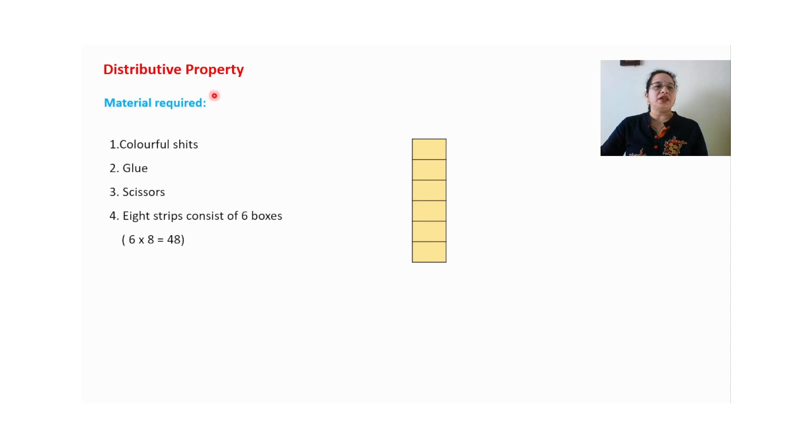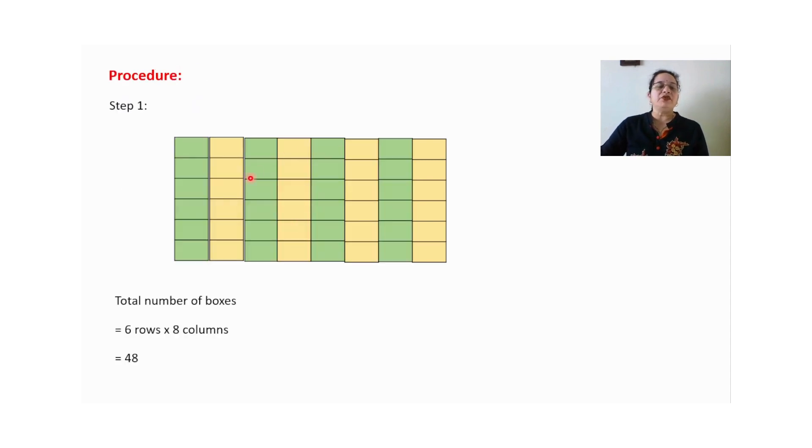Let us start with the activity. Material required is colorful sheets, glue, scissors. Eight strips consist of six boxes. Six inches strip you can take. My example I have taken six multiplied by eight is 48. For that I require eight strips of six boxes. Let us start with the activity.